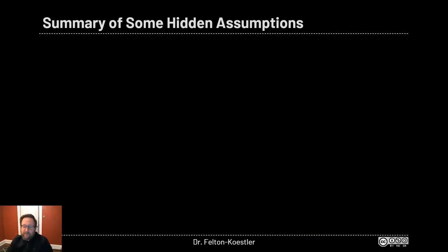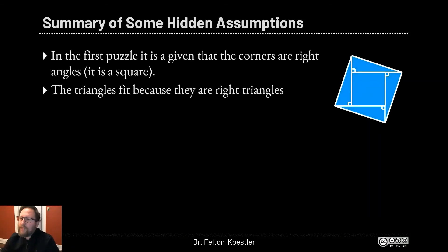So again, these are just some of the hidden assumptions. There are other details we'd want to work out to really fully flesh this out, but they're some of the big key points. In the first puzzle, it's given that those corners are right angles. We said we're building a square. The thing that we're concluding is we can actually fit these triangles in there because they are right triangles.